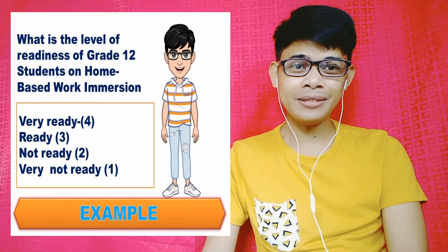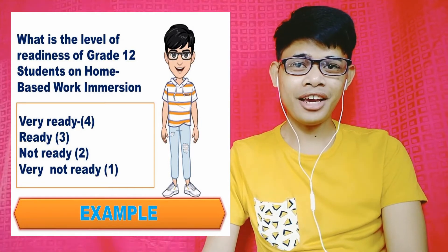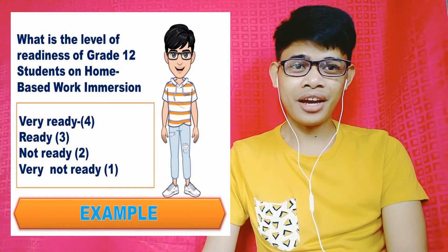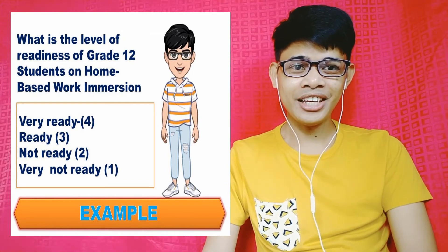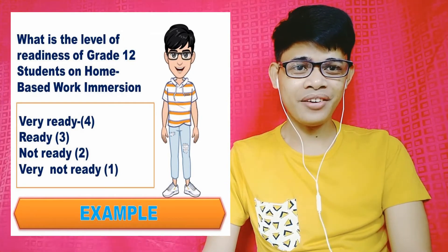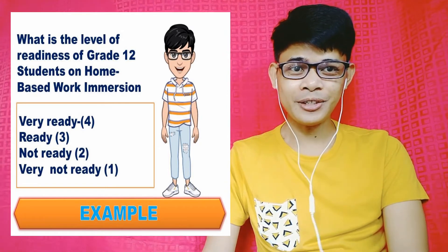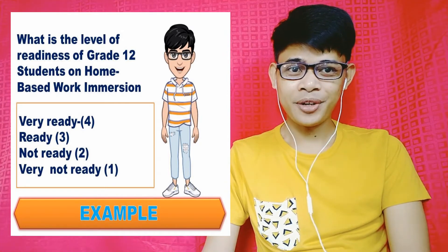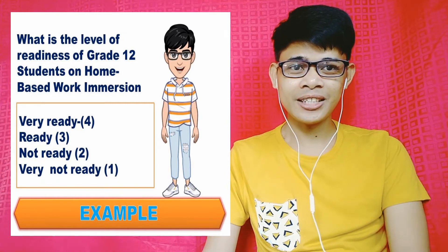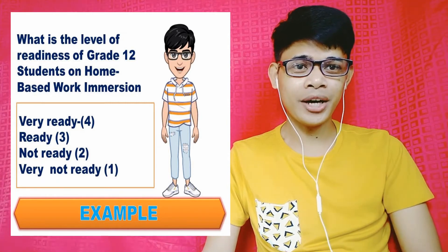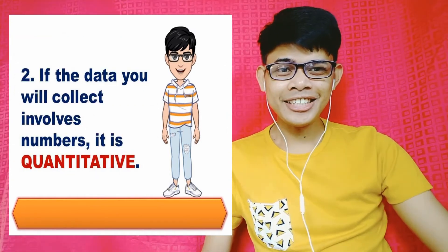There is still a possibility that we can assign numbers to it. For example, very ready is 4, ready is 3, not ready is 2, and very not ready is 1. Since there are numbers assigned, we can say that this research title is an example of a quantitative research title.